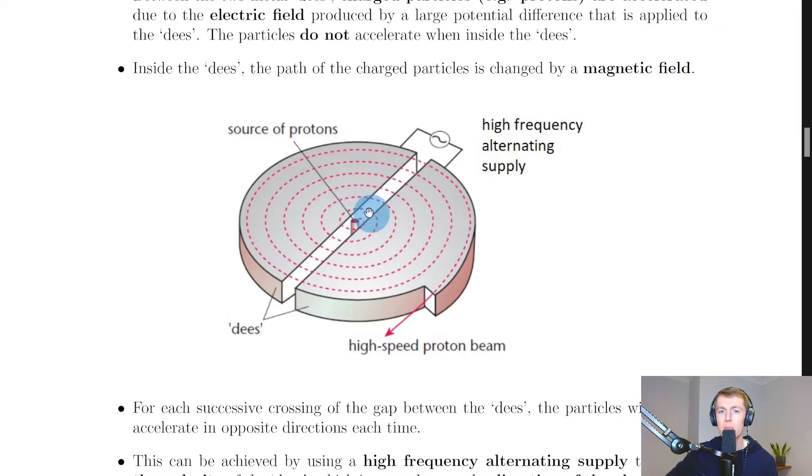The protons are going to keep accelerating at this point and then changing direction due to the magnetic field within the dees. You can see the radius of the curved path that is traced out by the proton beam is getting bigger and bigger as the particles get faster and faster until eventually they reach the required speed and exit the accelerator.